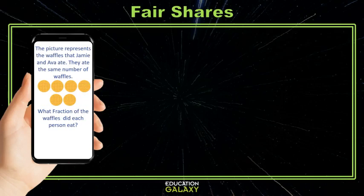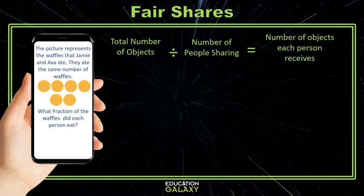Let's try one last one. The picture represents the waffles that Jamie and Ava ate. They ate the same number of waffles. What fraction of the waffles did each person eat? To calculate this, we divide the total number of waffles, six, by the number of people sharing, two. That gives us the number of waffles each person ate.